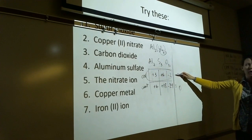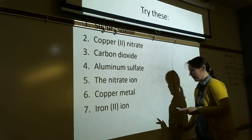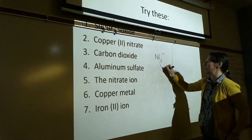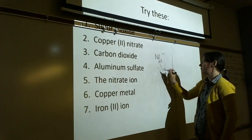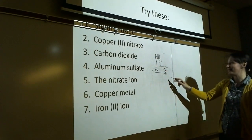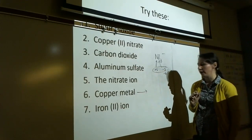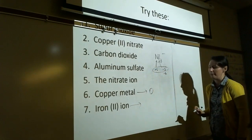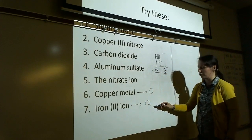Nitrate ion, NO3 minus: oxygen is minus two contributing minus six, so nitrogen must be plus five — because plus five minus six gives a minus one charge. For copper metal, it's a pure element, so oxidation number is zero. For iron two ion, it's a monatomic ion so its oxidation number equals its charge: plus two.